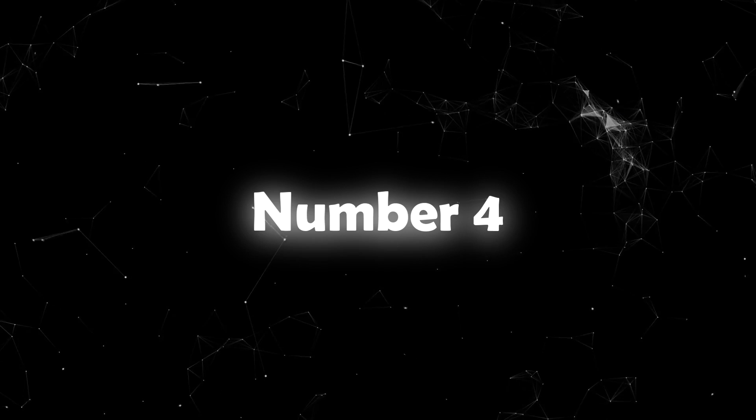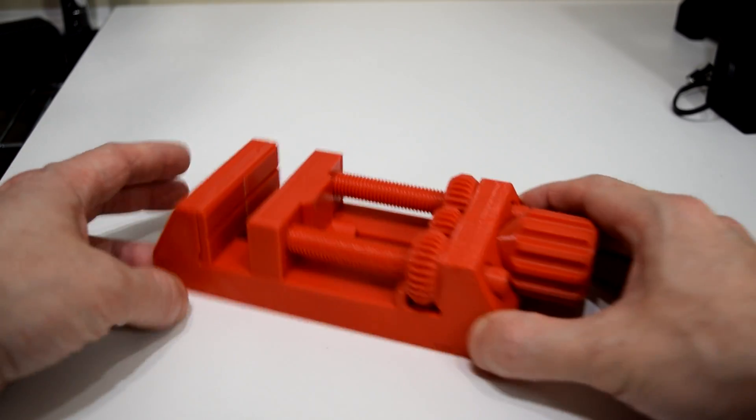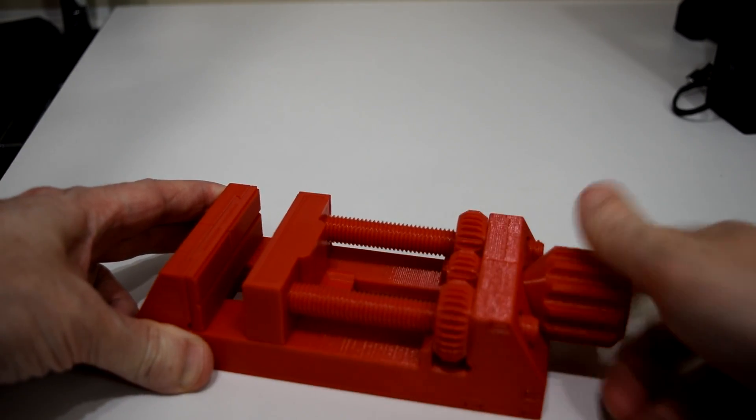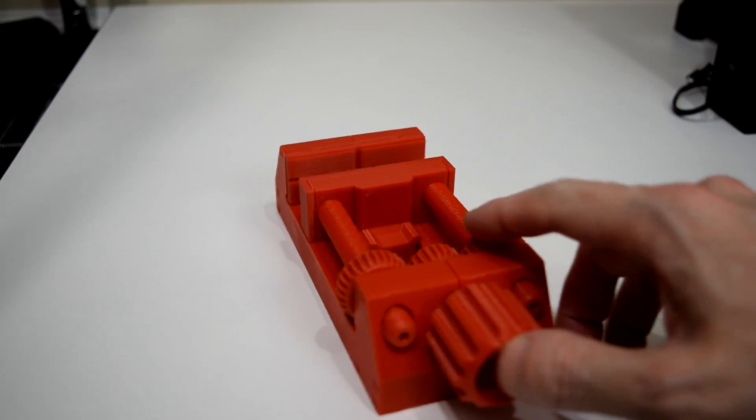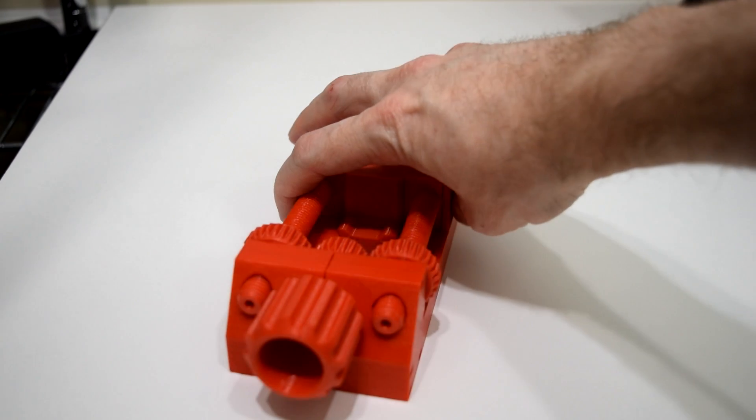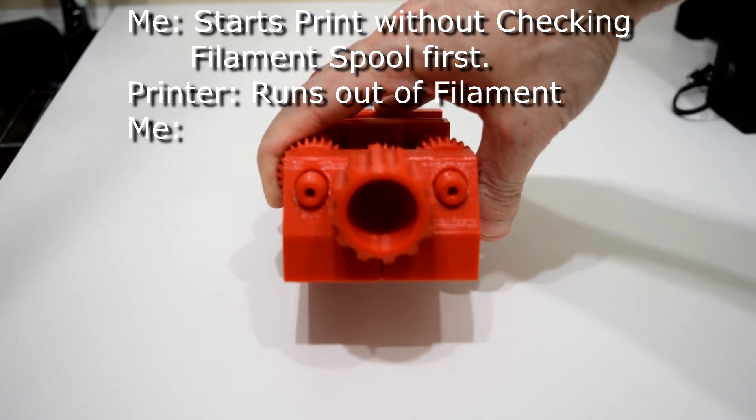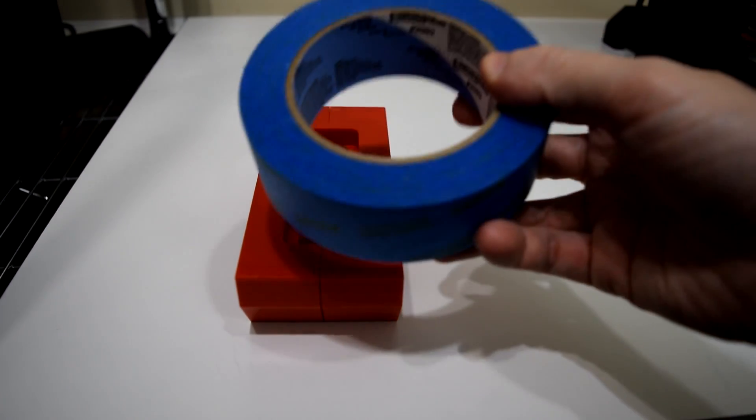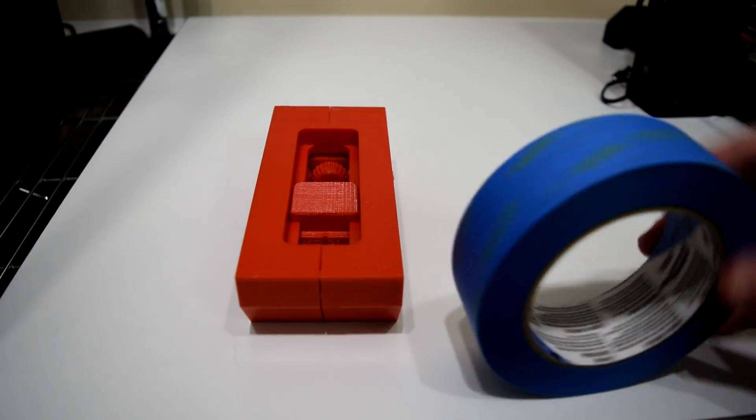Number 4. If you're like me and always looking for a way to hold stuff in place while working on a home project, this fully printed vise could be exactly what you're looking for. The vise is designed to be fully printable, so there's no need to go buy any extra hardware or screws to make it work. Just print, assemble, and go. The only downside is it doesn't have a way to mount it to a table or hold the vise in place when you're using it.